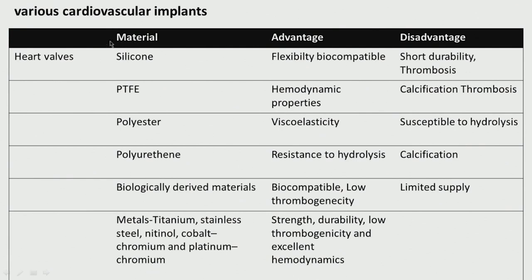Various cardiovascular implants — heart valves — use silicone, PTFE, polyester, polyurethane or biologically derived materials. PTFE has good hemodynamic properties, polyester is viscoelastic, polyurethane has resistance to hydrolysis, but they could have calcification or thrombosis. Biologically derived material is very good, but supplies are limited. For metals in heart valves: titanium, stainless steel, nitinol are all used.